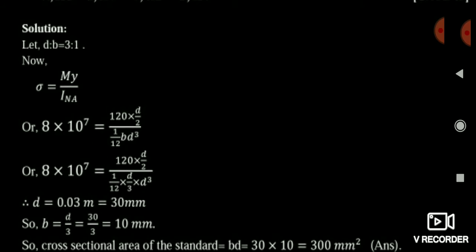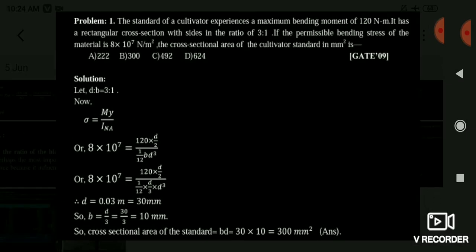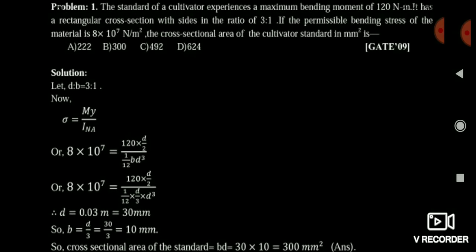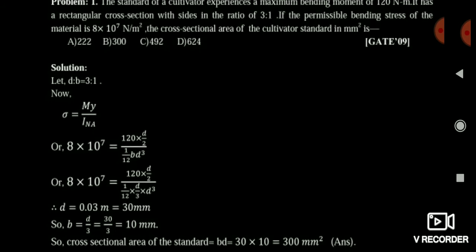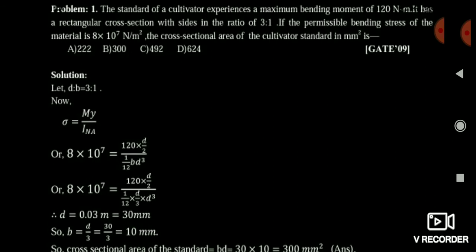Now it is asking for the cross-sectional area. Cross-sectional area is simply depth × thickness = D × B = 30 × 10 = 300 mm². It is a simple but logical question — if you understand the logic, you can solve all upcoming GATE questions on the cultivator easily.